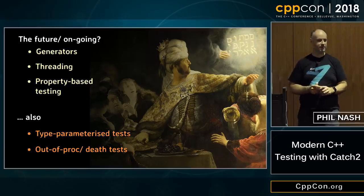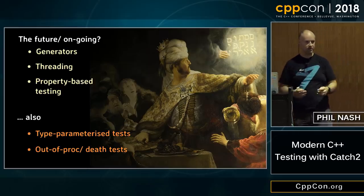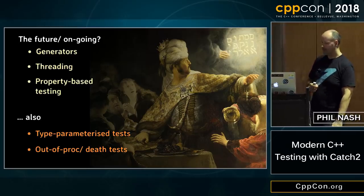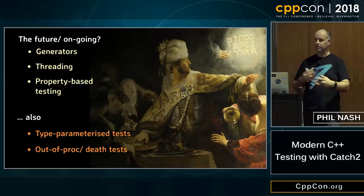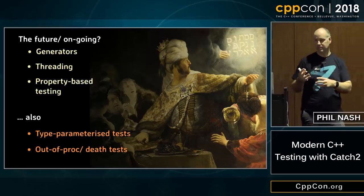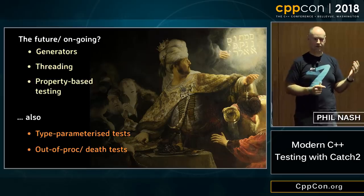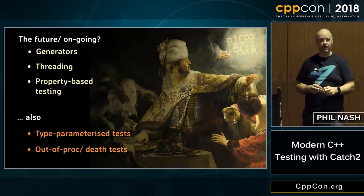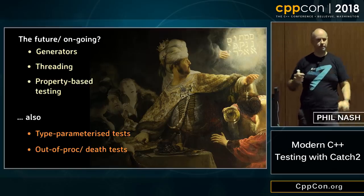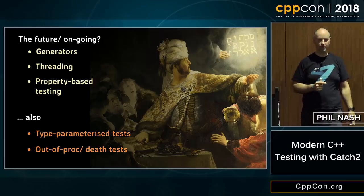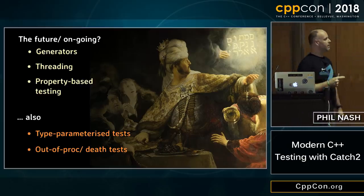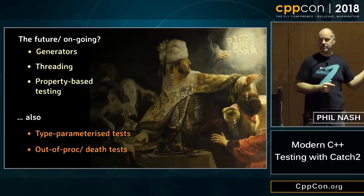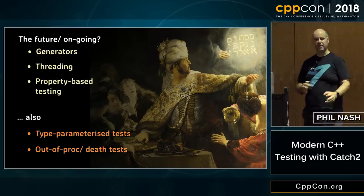Property-based testing is a different way of thinking about writing tests — it doesn't completely replace unit testing, but in many cases it's often the preferred first approach. We also have type-parameterized tests coming: whereas generators are data-parameterized tests, it's often nice to write one test that covers many different template instantiations. You can do that now in Catch using helper functions, but it would be nice to have better built-in support. And finally, death tests — or out-of-process calls in general — which frameworks like Google Test have. That requires spawning an external process in a portable way, which is non-trivial, so it's been put off but will come at some point.